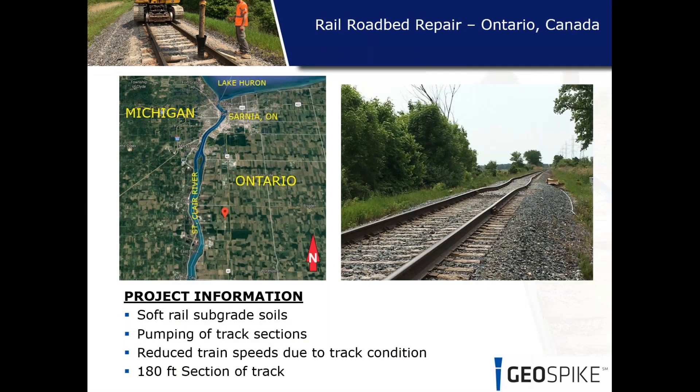We'll go to a case history where the GeoSpike system was used for a railroad bed repair project north of the border in Ontario, Canada. This was an area with the traditional problem of soft subgrade soils and pumping track sections. The rail owner had a slow order in place where they had to reduce speeds due to track conditions, negatively impacting their operations on this 180-foot section of track.